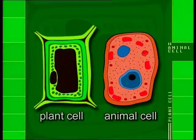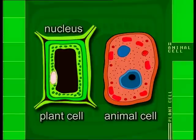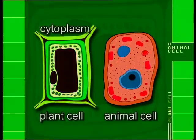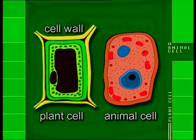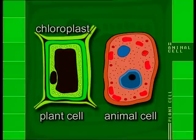A plant cell has a cell membrane, a nucleus and cytoplasm as well. It also has a cell wall, a vacuole and chloroplast.